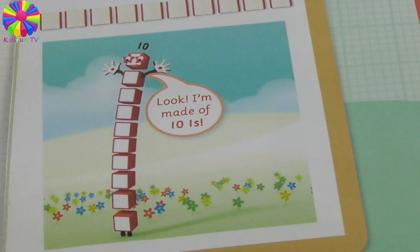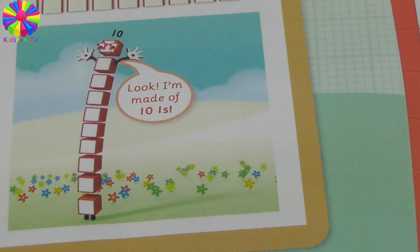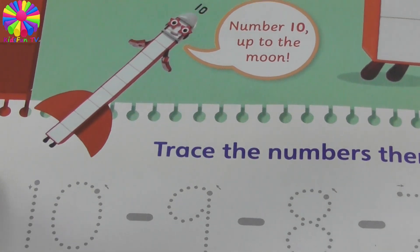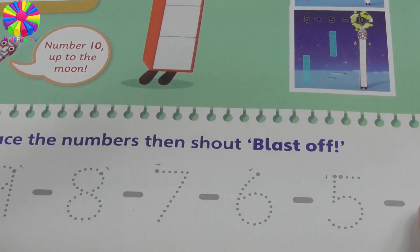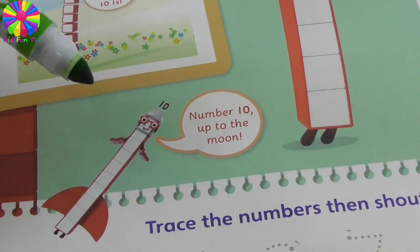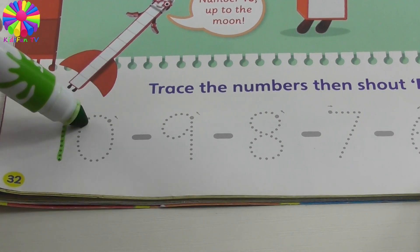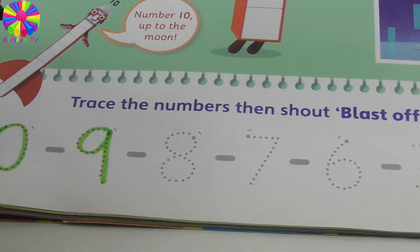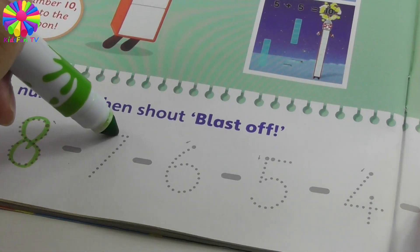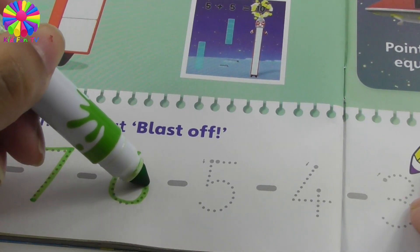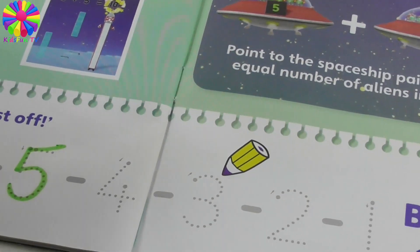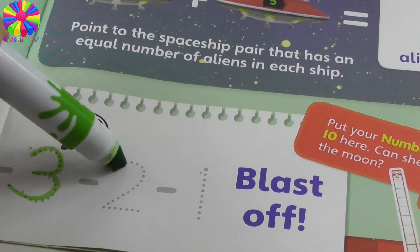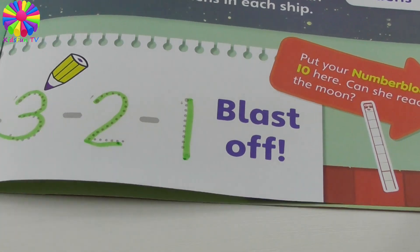Look — I'm made of ten ones! If you have ten times Number Block One, you have Number Block Ten. Trace the numbers, then shout blast off! Because Number Block Ten is going to the moon: ten, nine, eight, seven, six, five, four, three, two, one — and blast off!